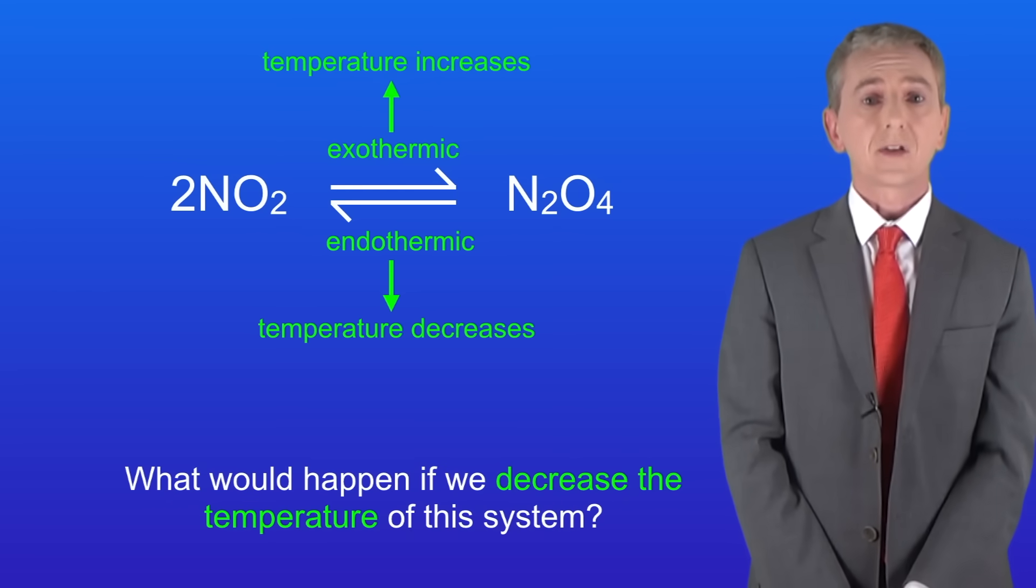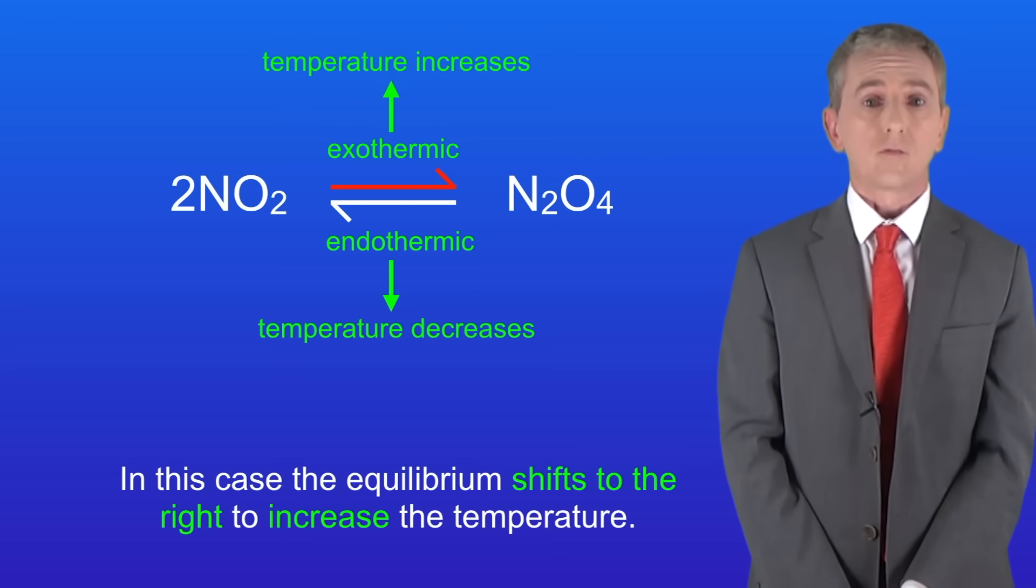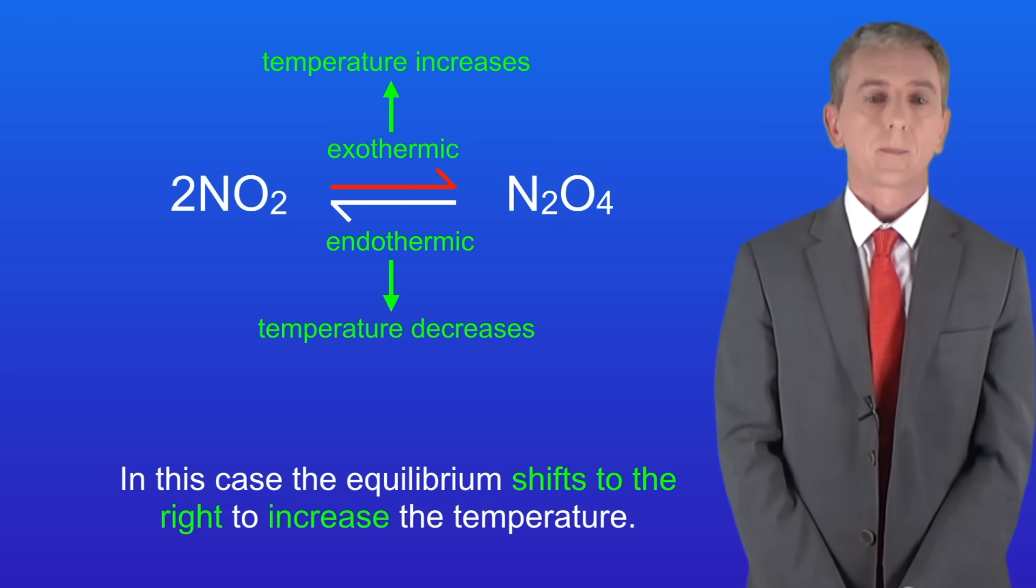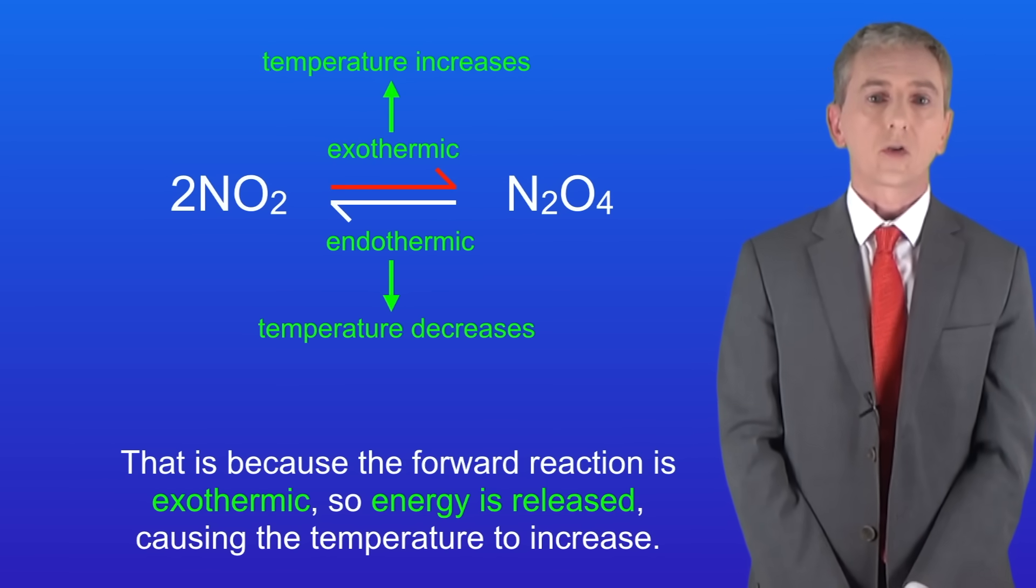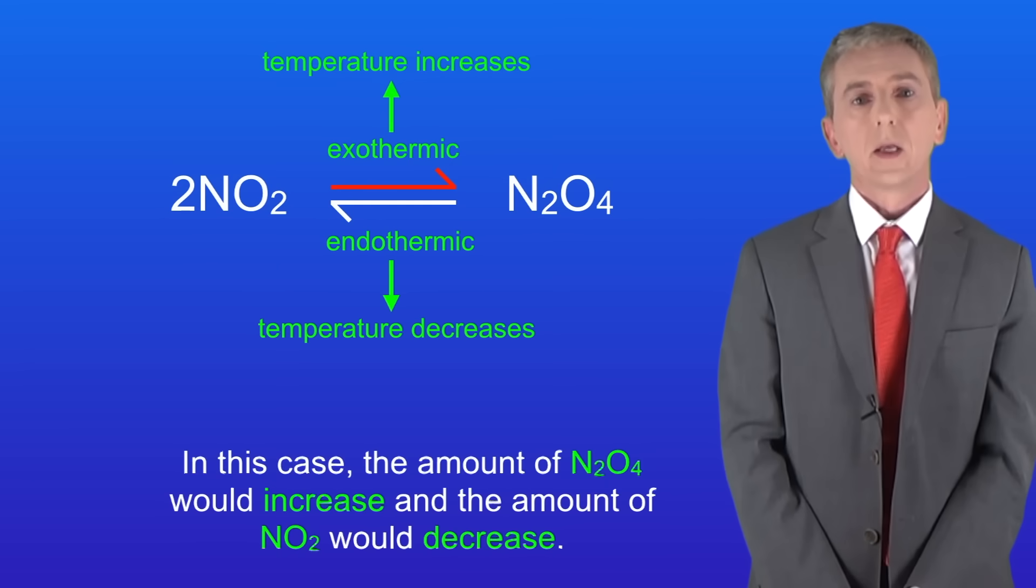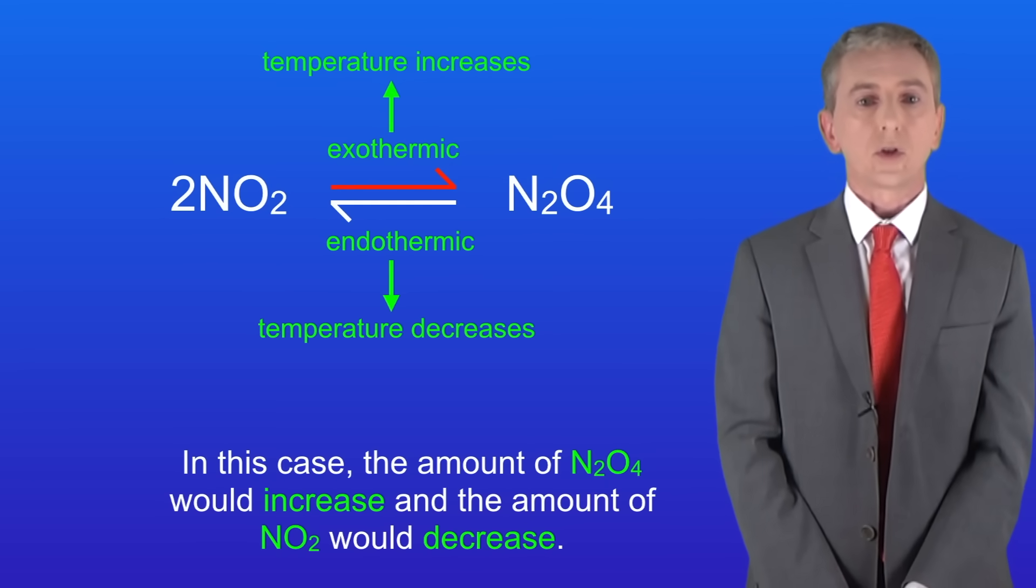So what would happen if we decrease the temperature of this system? In this case, the equilibrium shifts to the right to increase the temperature. And that's because the forward reaction is exothermic, so energy is released, causing the temperature to increase. So in this case, the amount of N2O4 would increase and the amount of NO2 would decrease.